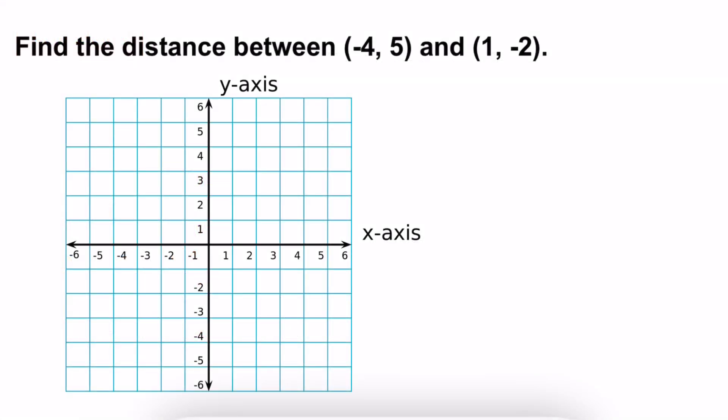Find the distance between negative 4, 5 and 1, negative 2. So before I do that, I want to plot those points. So negative 4 and 5 would be 2, 3, 4 here. Let's make my pen thicker. Okay, so it would be up here.